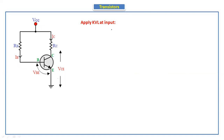Applying KVL at the input side, we get: Vcc minus Ib·Rb minus Vbe = 0, which gives us equation number one: Vcc = Ib·Rb + Vbe.